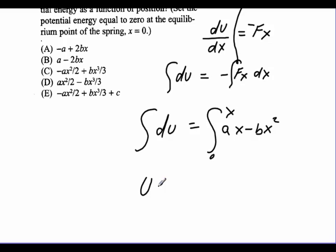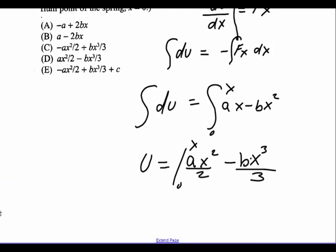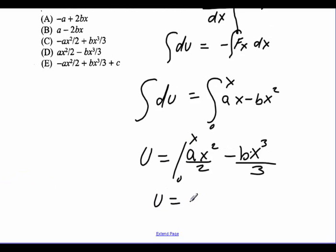And then when I integrate, I'll get my potential energy is equal to ax squared over 2 minus bx cubed over 3 between 0 and x. And when I do, I get back to the equation of my potential is equal to ax squared over 2 minus bx cubed over 3. And that's going to be my potential energy.